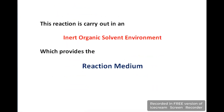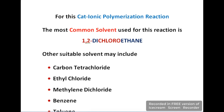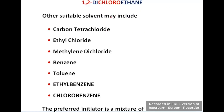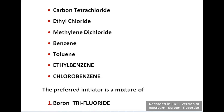The four reactors require an inert organic solvent environment, and that solvent will be used as the reaction medium. For this cationic polymerization reaction the most common solvent used is 1,2-dichloroethane. Other solvents are also used, including carbon tetrachloride, ethyl chloride, methylene dichloride, benzene, toluene, ethylbenzene, and chlorobenzene.